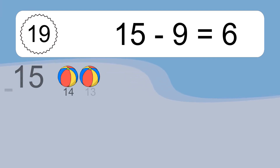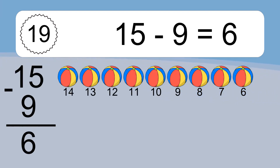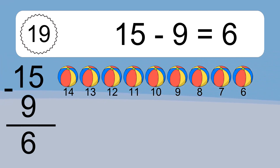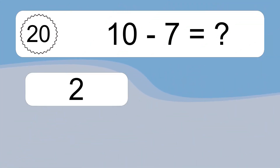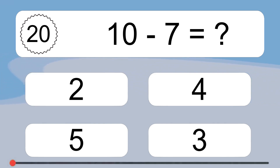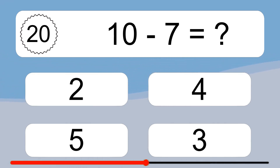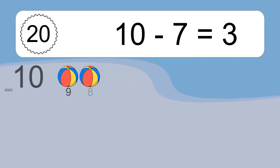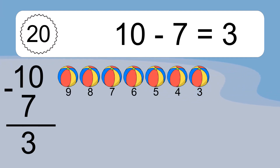15 minus 9 equals what? 15 minus 9 equals 6. Let's count it: 14, 13, 12, 11, 10, 9, 8, 7, 6. 10 minus 7 equals what? 10 minus 7 equals 3. Let's count it: 9, 8, 7, 6, 5, 4, 3.